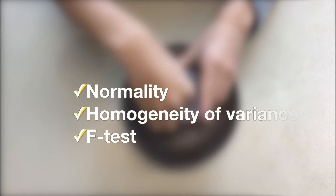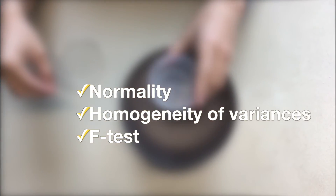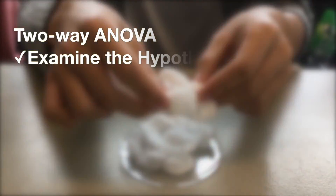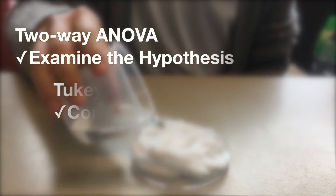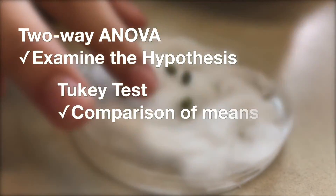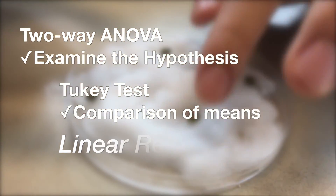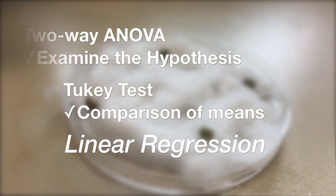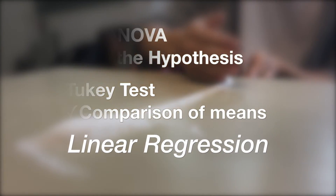First, normality and homogeneity of variances of the data will be checked by F-test. Transformation of data will be done if necessary. Then, the data collected will be used to conduct a two-way ANOVA test to examine the hypotheses. Tukey test will be used for comparison of means. After that, the data will be analyzed to determine if there is a linear regression between the two independent variables, concentration of salts and that of fertilizer.